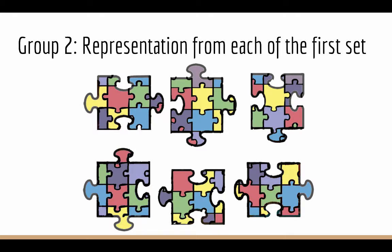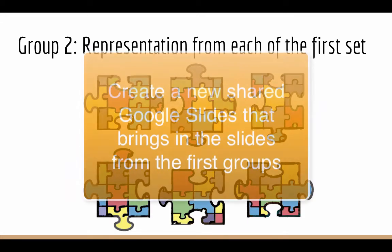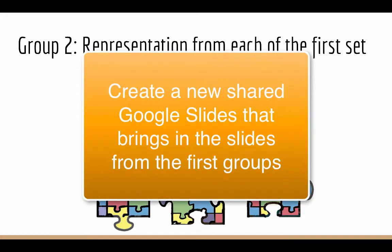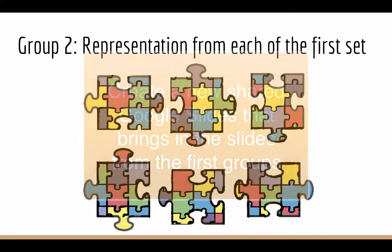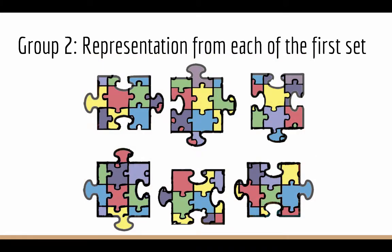Create a second set of groups where each of those units is represented. Within these new groups, a new Google Slides can be created and shared amongst the people in those groups so that they can bring the materials from their unit or their chunk of the course into the one larger Google Slides being created for each of those groups. So what you have at the end of this work is each group with a Google Slides that represents the entire course.